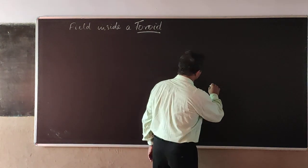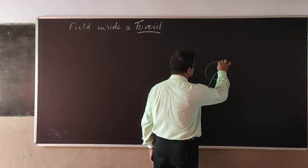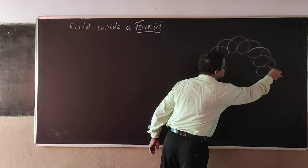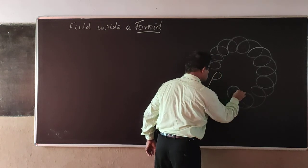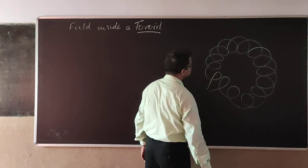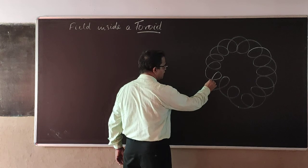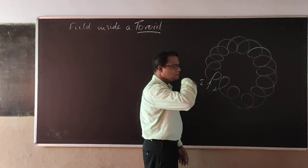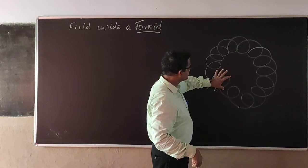So if I draw the figure, it appears to be like this. Current I passes through this and will be passing out through this. And both the ends are connected.